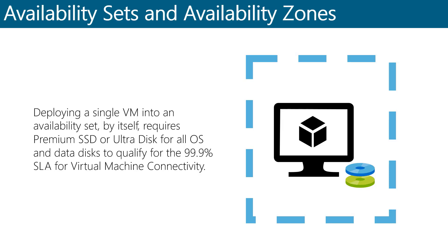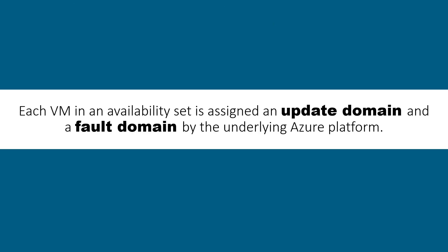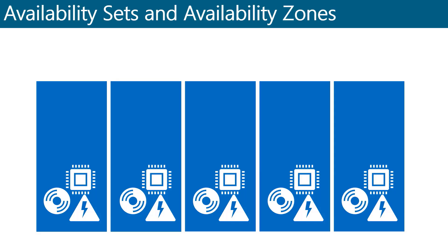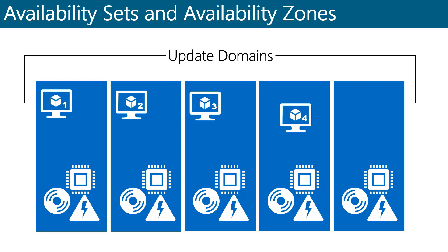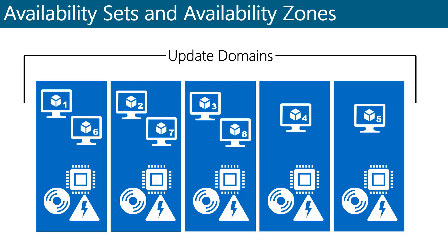When you deploy VMs into an availability set, each VM is assigned an update domain and a fault domain by the underlying Azure platform. In any given availability set, there are five non-user configurable update domains assigned by default, though Resource Manager deployments can be increased to up to 20 update domains. These update domains are groups of virtual machines and underlying physical hardware that can be rebooted at the same time. If you place more than five VMs into an availability set, the sixth VM is placed into the same update domain as the first, the seventh into the same as the second, and so on.